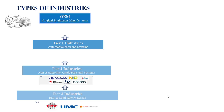Tier 2 industries design and manufacture non-automotive parts and systems — companies like NXP and Texas Instruments are examples. When we look at Tier 1 industries in India, we have companies like Bosch, Continental, and Valeo. These companies deal with automotive parts and systems, and they are well known in India.